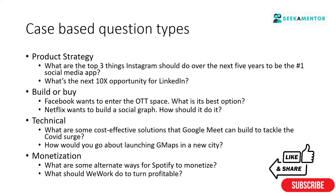The next bucket is product strategy. As the name suggests, these are strategic-level questions that don't go into features or implementation, but ask what a company or product should do over the longer term. For example: what are the top three things Instagram should do over the next five years to be the number one social media app? Or, what's the next opportunity for LinkedIn to get 10x users? You're expected to talk about strategy, mega trends, and how the industry is moving.